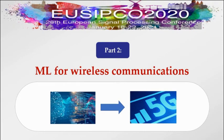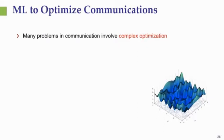Now that we've reviewed the basics of deep networks, we want to turn to discuss how we can harness their power in the context of wireless communications and see how they can help us solve difficult problems in the context of 5G and beyond networks. Let's begin by considering why we may need machine learning in the context of communications.